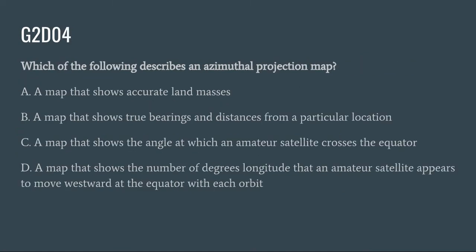G2D04: Which of the following describes an azimuthal projection map? A. A map that shows accurate land masses. B. A map that shows true bearings and distances from a particular location. C. A map that shows the angle at which an amateur satellite crosses the equator. Or D. A map that shows the number of degrees longitude that an amateur satellite appears to move westward at the equator with each orbit. The correct answer is B: a map that shows true bearings and distances from a particular location.